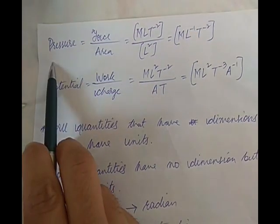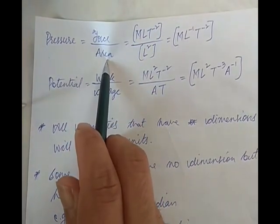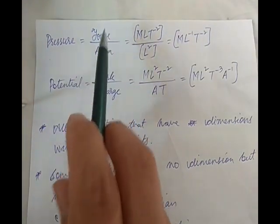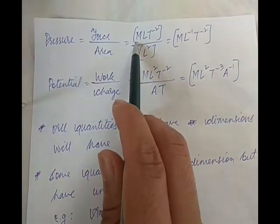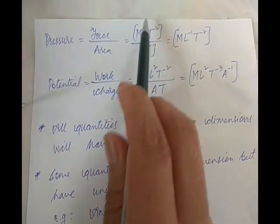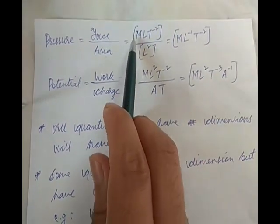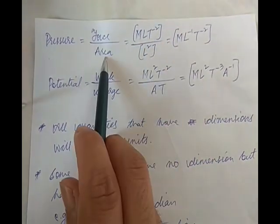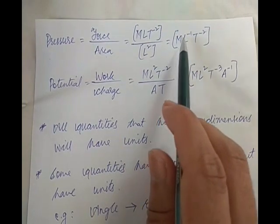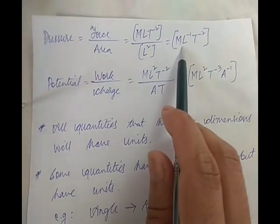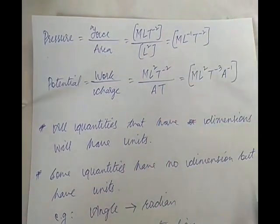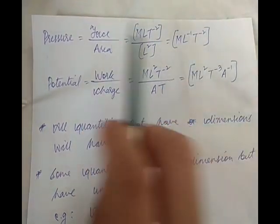Pressure is force upon area. The dimensional formula for force is MLT⁻², and area is length squared, so L squared. This gives us ML to the power minus 1, T to the power minus 2 for pressure.